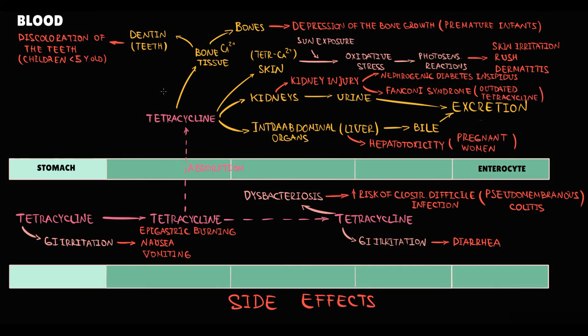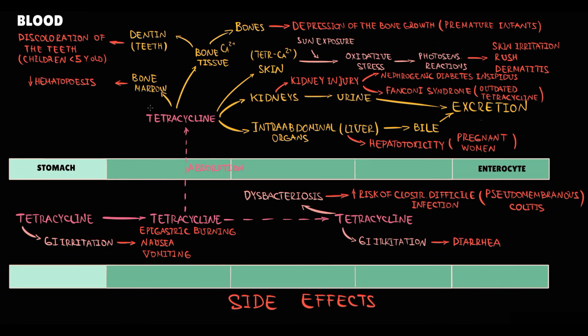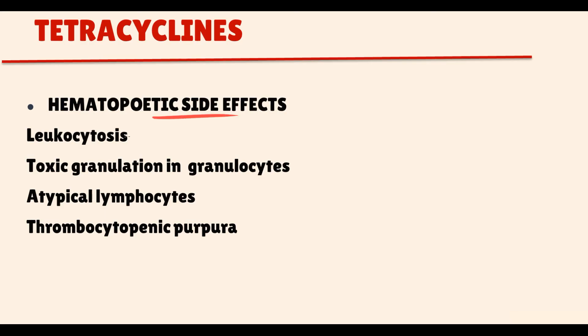Now, there are a few tissues where tetracyclines can only make it worse. One of them is bone marrow. Tetracyclines easily penetrate into the bone marrow where they can disrupt normal hematopoiesis that will result in leukocytosis, formation of toxic granulation in granulocytes, formation of atypical lymphocytes, and thrombocytopenic purpura.